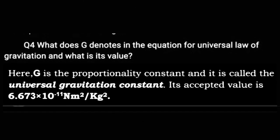Question 4: What does G denote in the equation for the universal law of gravitation, and what is its value? G is a proportionality constant called the universal gravitational constant. Its value is 6.673 × 10 to the power minus 11 newton meter square per kg square.